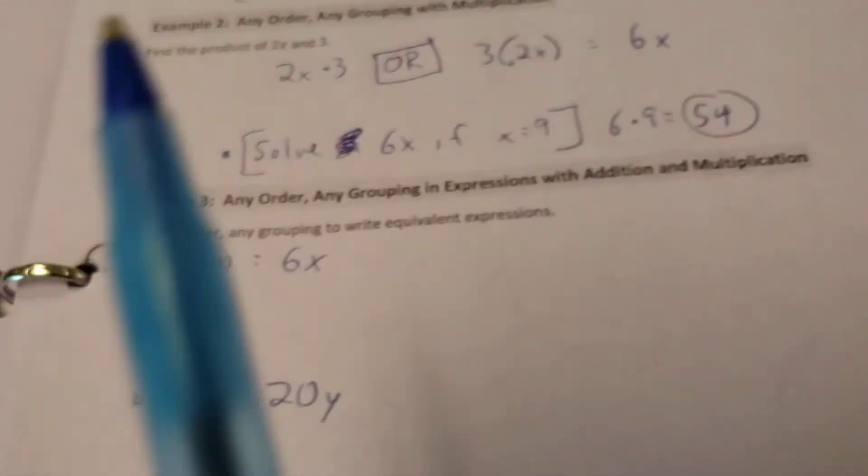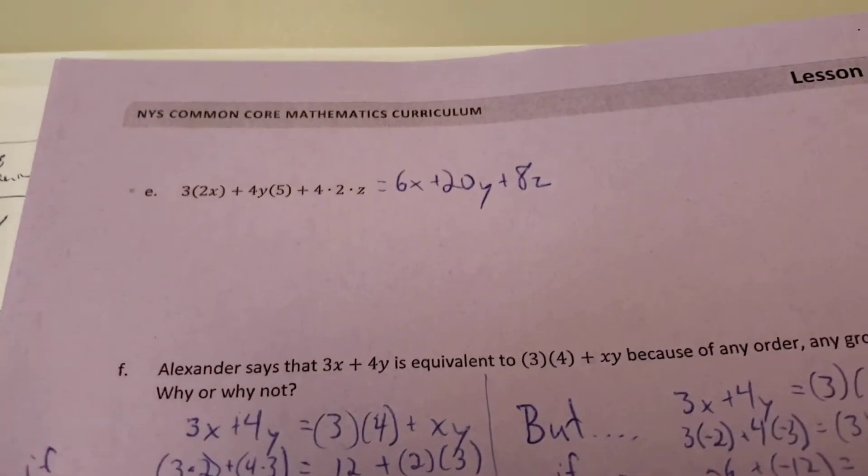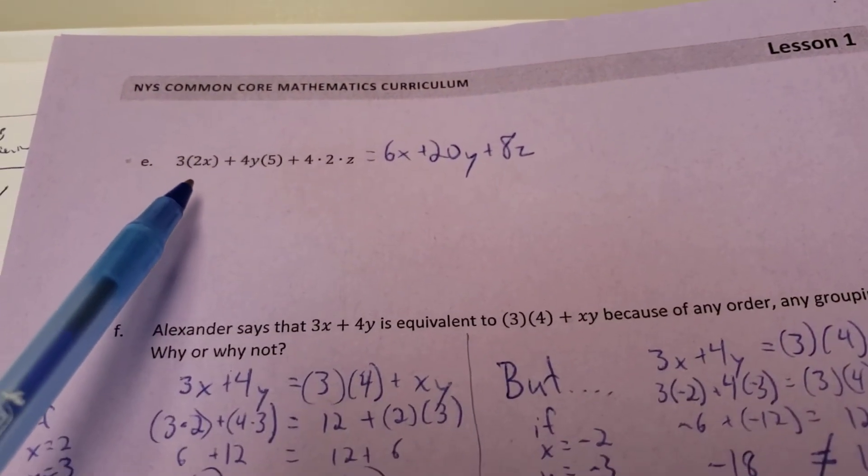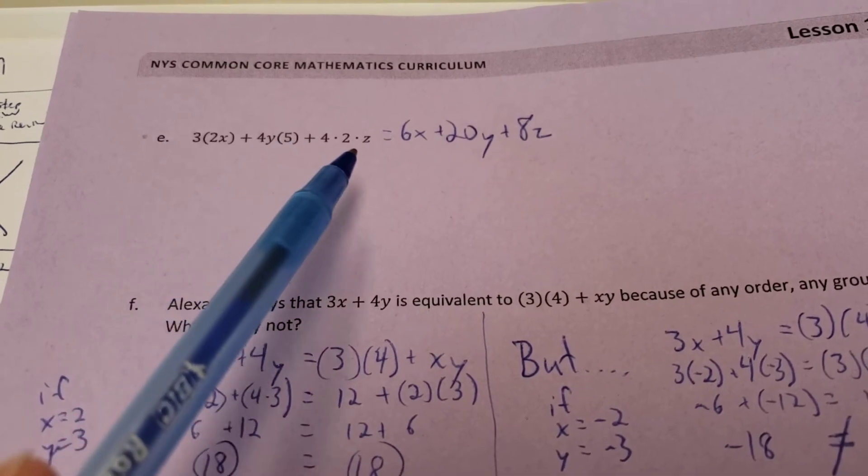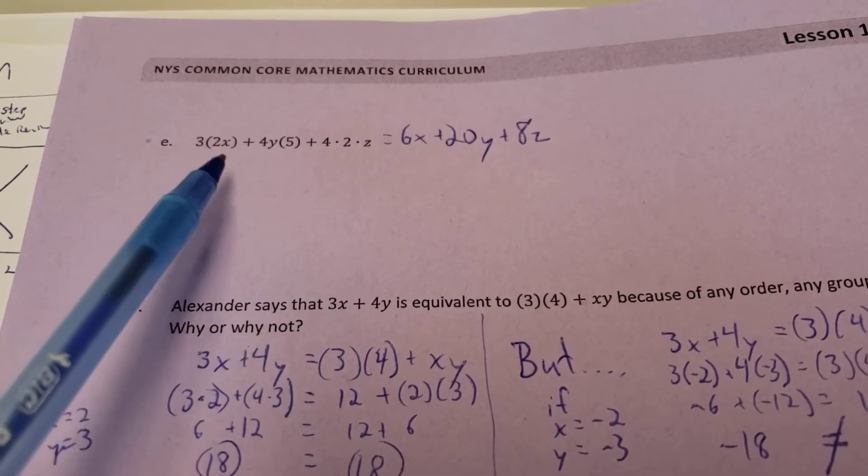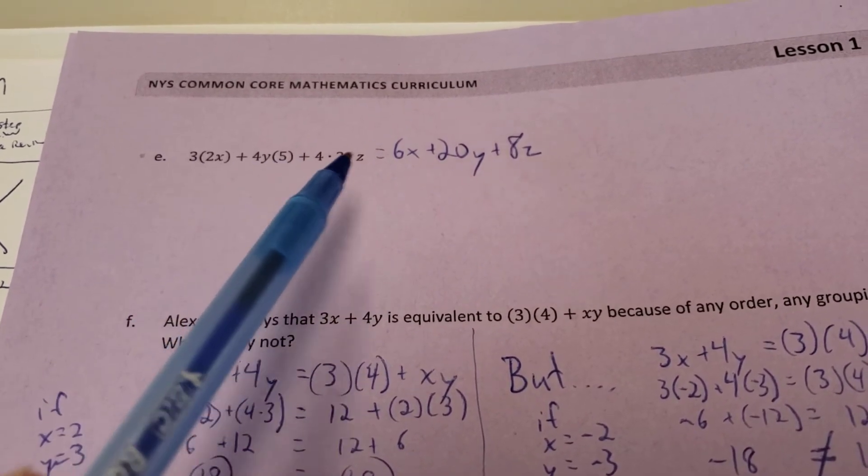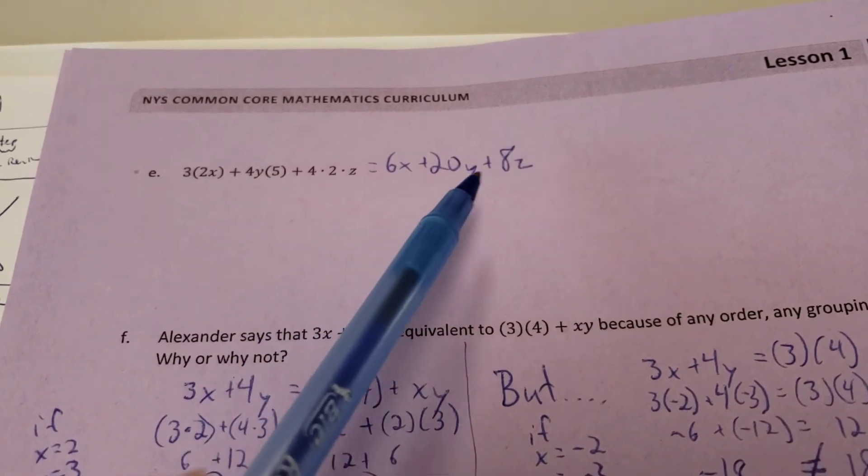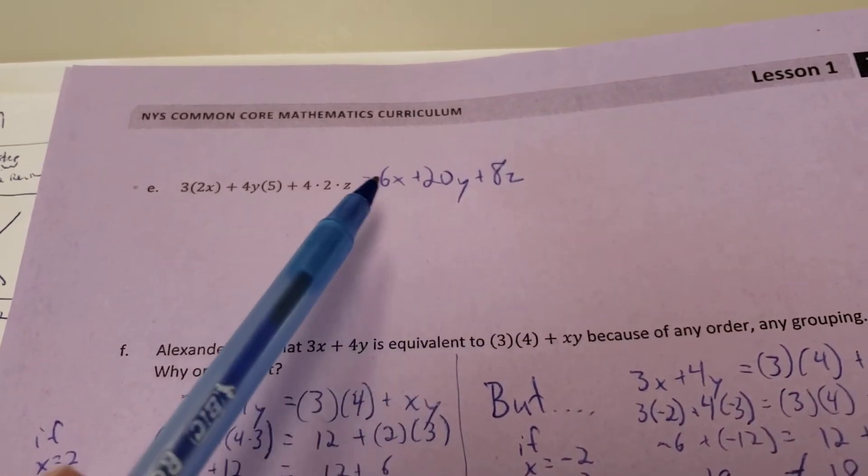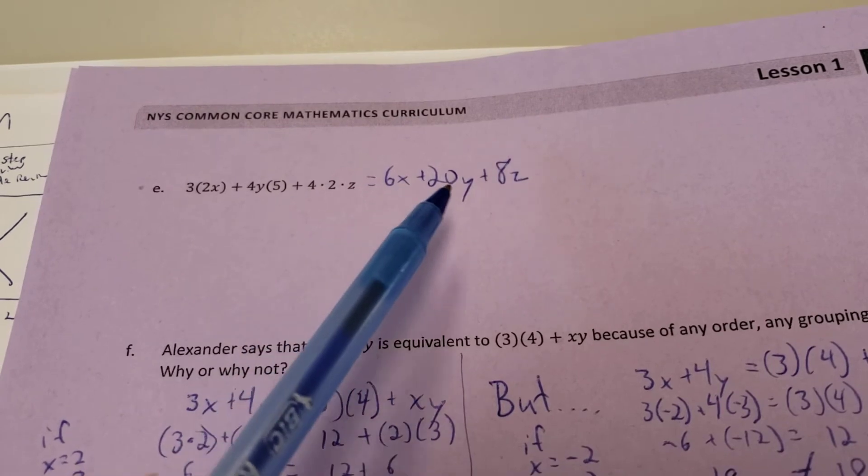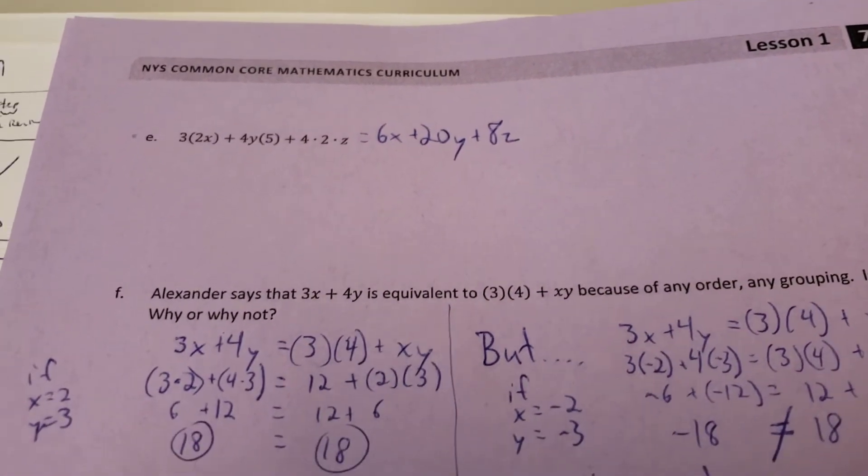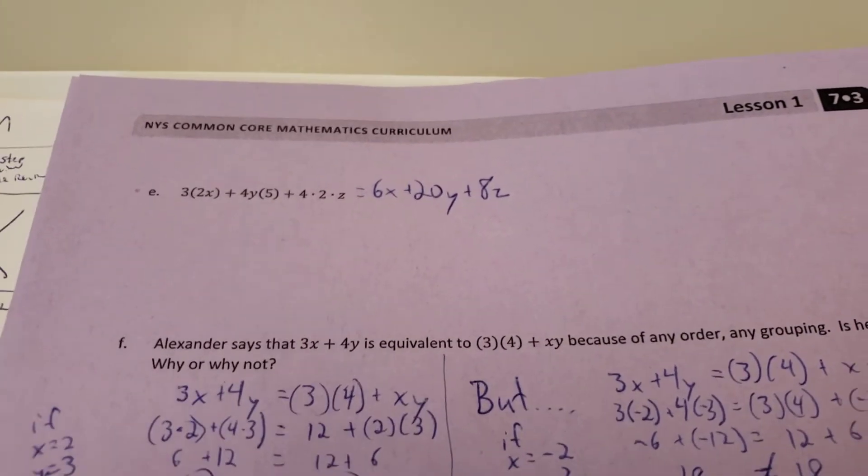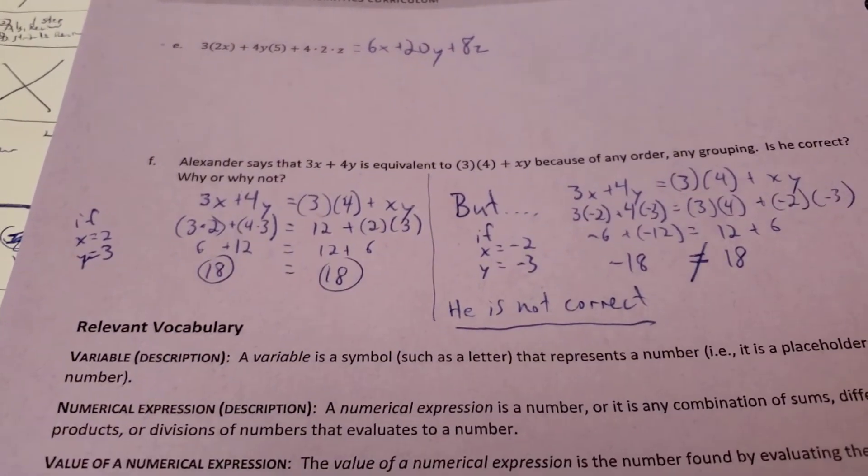Alright, and we shift over to our next page. If I had all this together, 3 times 2x plus 4y times 5 plus 4 times 2 times z, remember, I'm going to do multiplication chunks first before I do any adding. So I get 6x plus 20y plus 8z. And I can't add these together anymore because x numbers are separate from y numbers. Y numbers are separate from z numbers. So I couldn't just total them all together. So they have to be left individual.